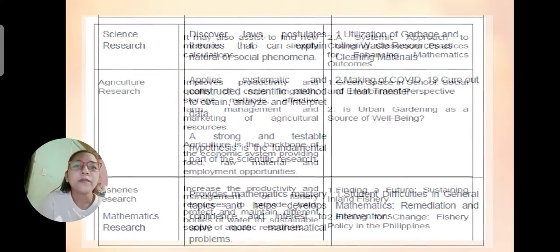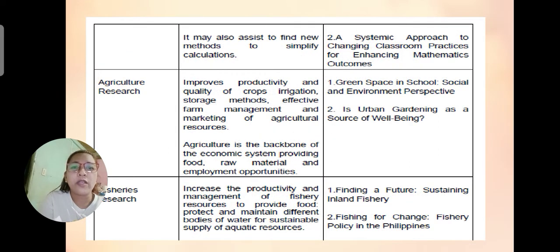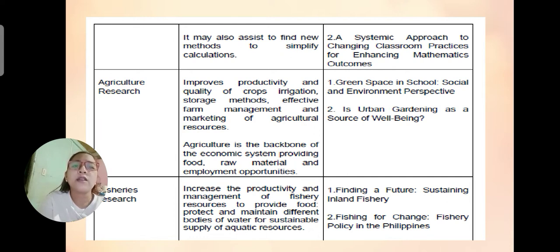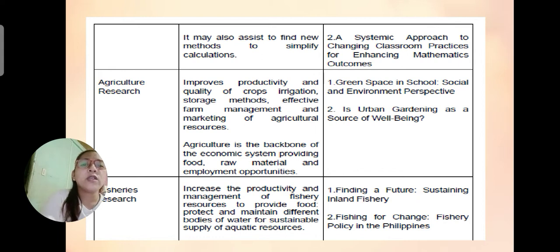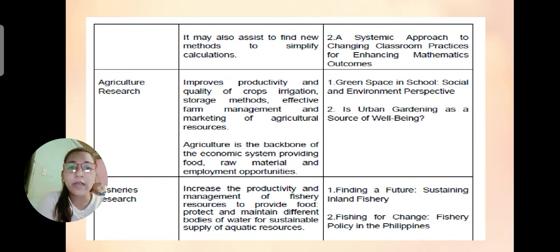Another area of interest is agriculture. Agriculture research helps improve productivity and quality of crops, irrigation, and storage methods. It covers effective farm management and marketing of agricultural resources. Agriculture is the backbone of the economic system, providing us food, raw materials, and employment opportunities. Two examples are shown on screen.